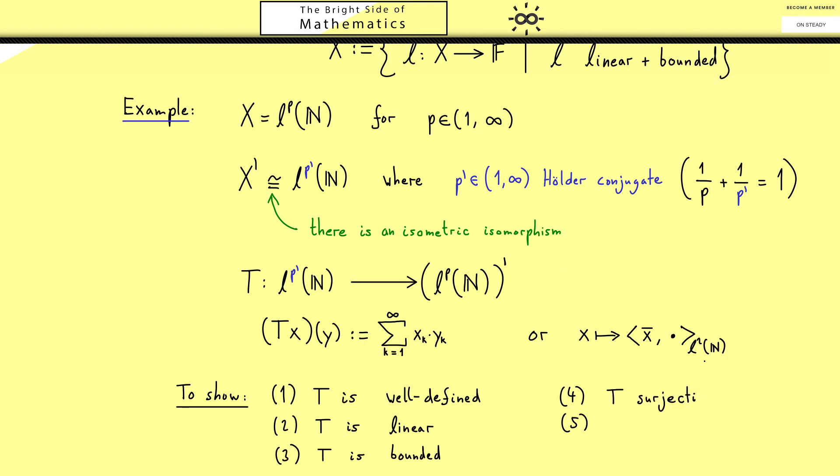Now because we want an isomorphism we really need that the map is bijective. So I split that up: we first show that T is surjective. And then in part 5 we show that the norm stays the same for all x. This equation we just call isometric and please note the injectivity is immediately given by this property. Therefore together with 4 we know there is an inverse map that is also linear and bounded.